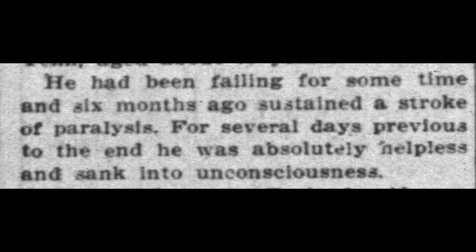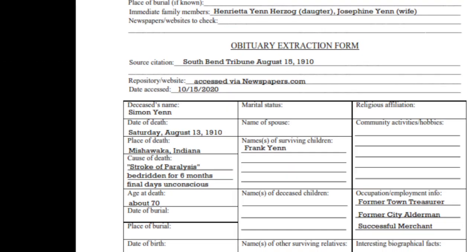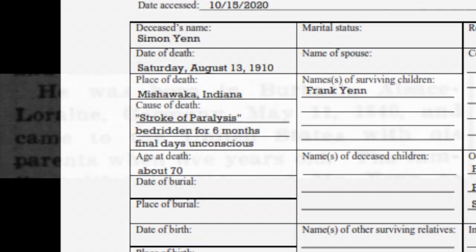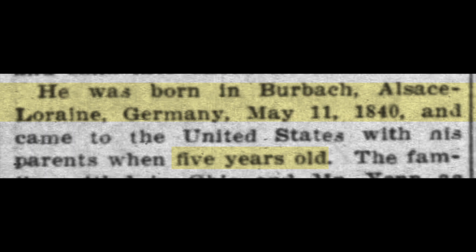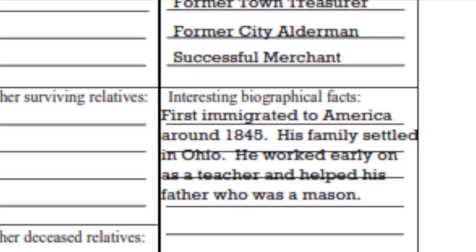Here we have some information about Simon's illness and his death. He had been ill for approximately six months due to a stroke and had spent his final days unconscious. We can add this information to our extraction form. Here we are given Simon's birth date and location, and we now know his age when he came to America. Reading further, we see that from Germany, the Yen family settled in Ohio, and in his early years, Simon worked as a teacher and as a mason with his father.